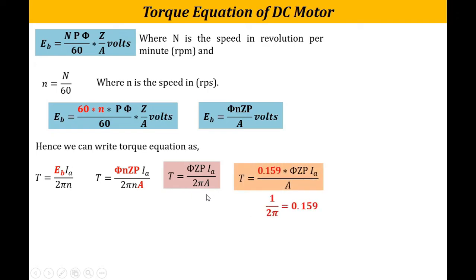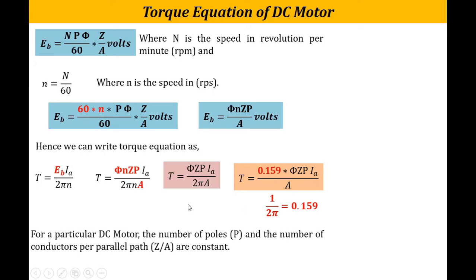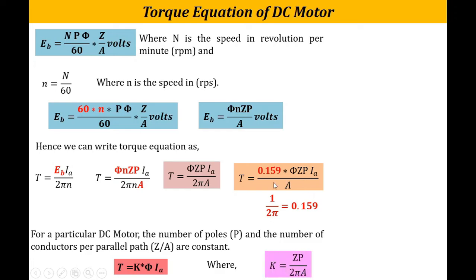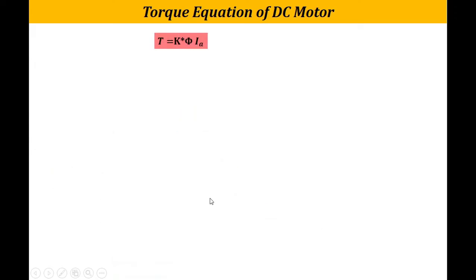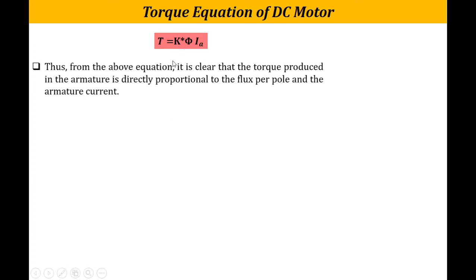Since 1/(2π) = 0.159, we can write T = 0.159 × φ × Z × P × Ia / A. For a particular DC motor, the number of poles P and the number of conductors per parallel path Z/A are constant. Therefore we write T = K × φ × Ia, where K = ZP / (2πA). So the torque equation of a DC motor is T = KφIa, meaning the torque developed is directly proportional to flux and directly proportional to armature current.